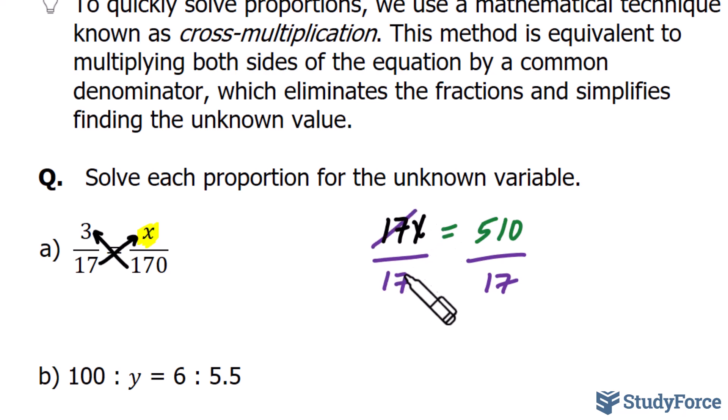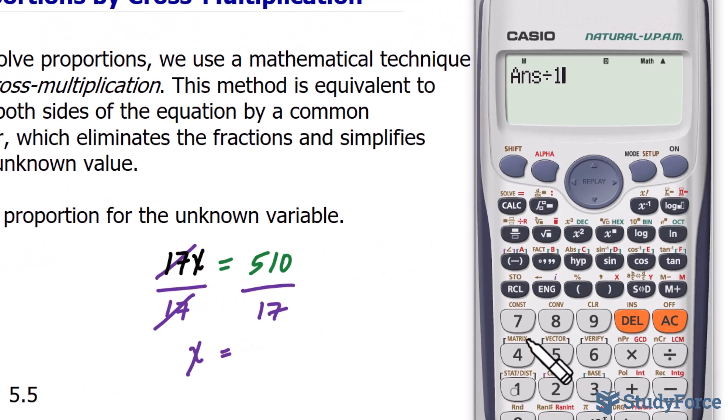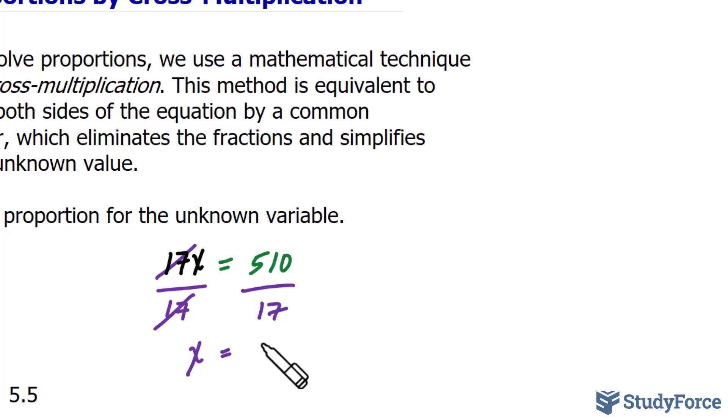Notice that this 17 and that 17 cancel out. And whatever 510 divided by 17 is, that's our value for x. So the number on our screen divided by 17 gives us an answer of 30. And that's what makes the proportion true.